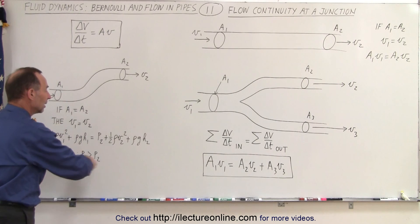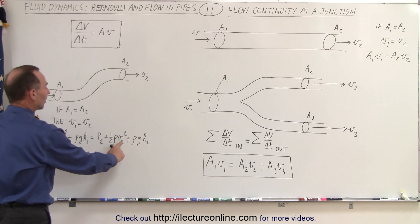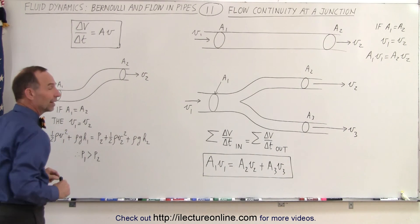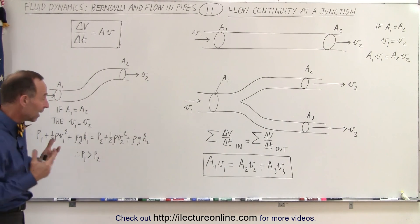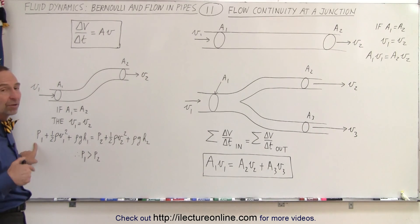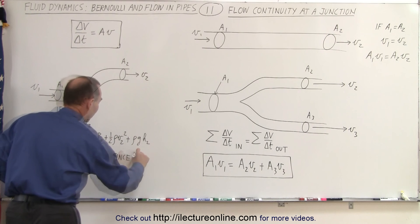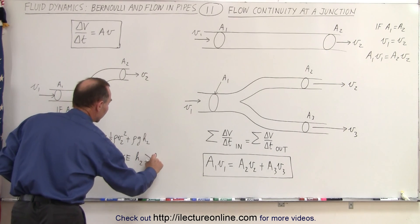Then taking a look at Bernoulli's equation, knowing that the velocities remain the same but H2 is greater than H1, the only way that can be compensated for is not by the change in velocity, but by the change in the pressure. So since H2 is greater than H1,